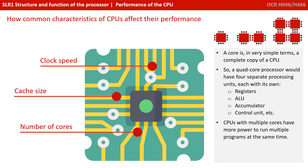The final factor to consider is CPU cores. A core is, in very simplistic terms, a complete copy of a CPU. So for example, a quad core processor would have four separate processing units, and each would have its own copy of registers, ALU, accumulator, etc. Therefore, a CPU that has multiple cores actually has the power to run multiple programs at the same time.